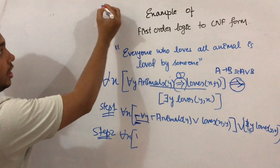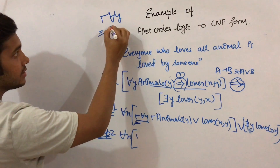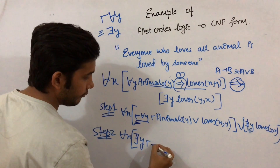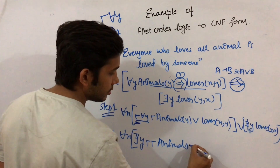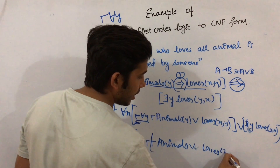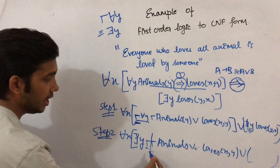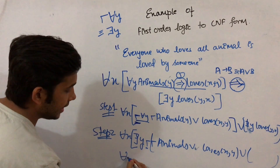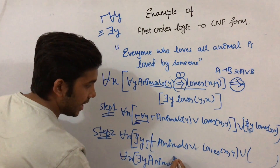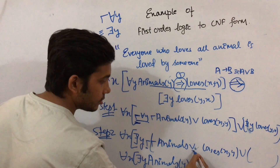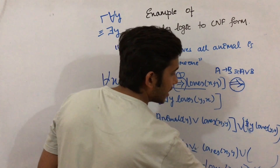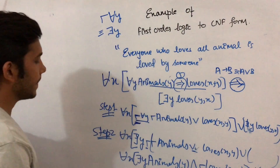We know that the negation of 'for all Y' can be written as 'there exists someone.' So it converts to: there exists Y, negation of animals(Y), and negation of loves(X, Y). The double negations cancel out, giving us: there exists Y, animals(Y), and negation of loves(X, Y) — or there exists someone, loves(Y, X). This was step two.